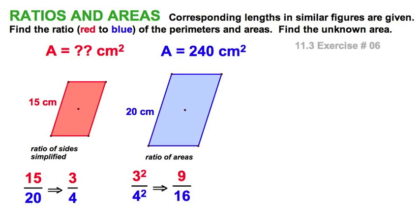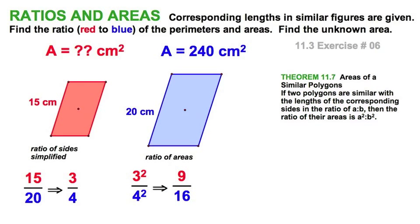Because we know that according to theorem 11-7, the ratio of the areas is the square of the ratios of the corresponding sides. Now, had we squared the 15 and the 20, we'd have 225 to 400. That's ridiculous. And then you would end up multiplying all these big numbers unnecessarily.